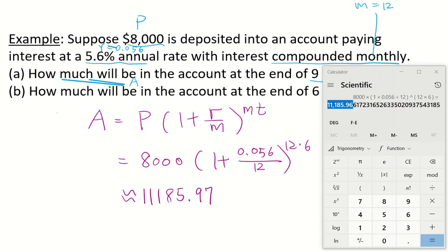This is how I solved part B in steps. The answer is 11,185.97. This many dollars. I hope you got it right. And see you in the next video.